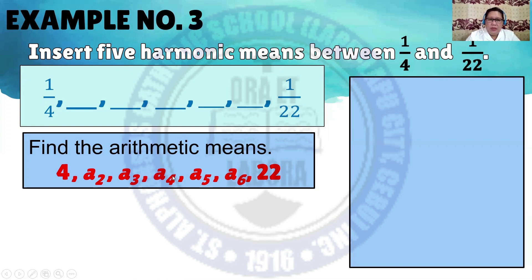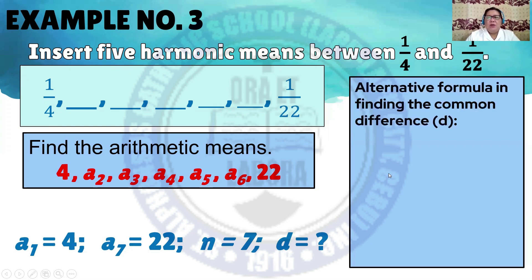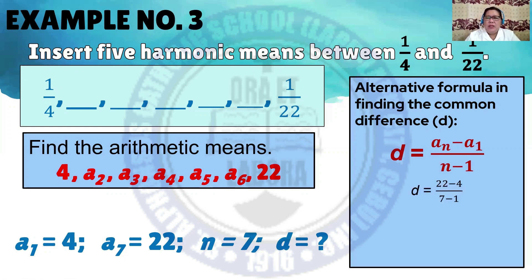There are 7 terms total, so N is equal to 7. Using the alternative formula for the common difference: D equals A sub N minus A sub 1, over N minus 1. So 22 minus 4, over 7 minus 1. D equals 18 over 6. Therefore, the value of D is 3.